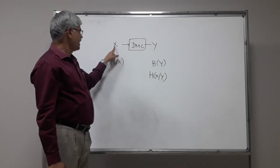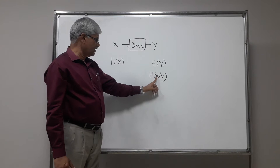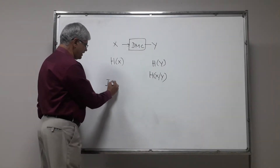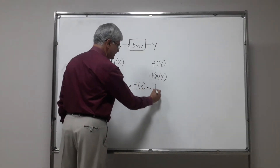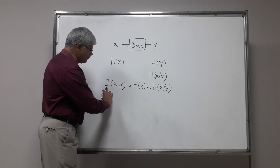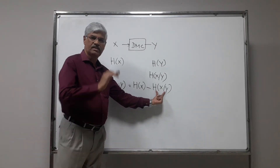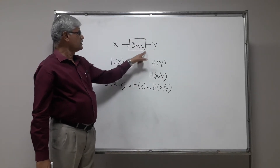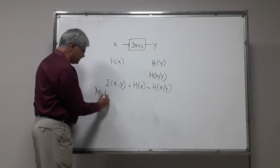We have x and we know its entropy. We have received y, and we would like to know what happens to the entropy — specifically, the entropy of the source given that y has been received. This quantity I(x, y) is defined as H of x minus H of x given y. This is what is defined as mutual information. H of x is the entropy of the source, and H of x given y is the entropy of the source given that y has been received. The difference between these is the entropy resolved by the channel, and that is known as mutual information.